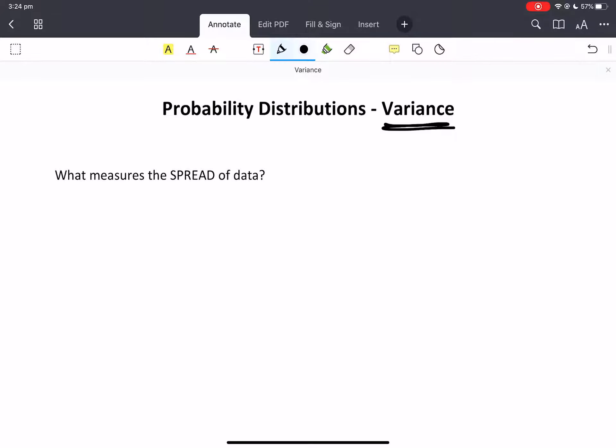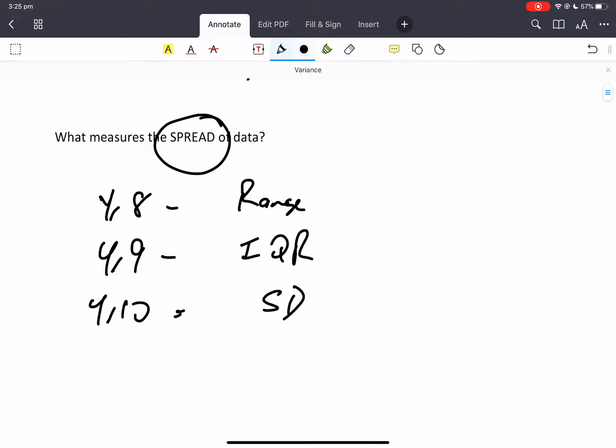Let's think about our variance. What measures our spread of data? Back in year eight we did the range. In year nine, because we calculated the five number summary, we had the interquartile range. In year ten we spoke about the standard deviation in a lesson. Didn't actually calculate it but we spoke about it.